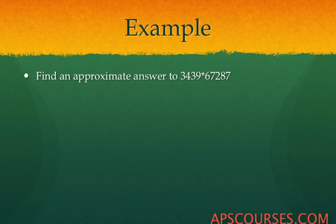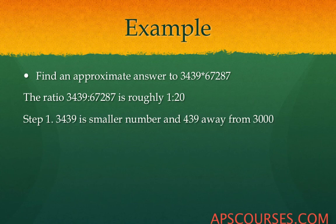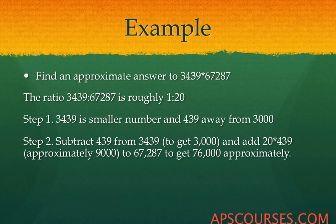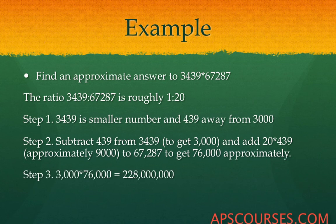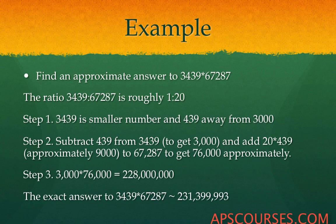Find an approximate answer to 3439 multiplied by 67287. The ratio is approximately 1 is to 20. Step 1: change the smaller number to a comfortable multiple — subtract 439 from 3439 to get 3000. Step 2: perform the reverse operation on the larger number by adding 20 times 439, giving approximately 76000. Multiply 3000 by 76000 to get 228000000 as the approximate answer. The exact answer is 231399993, giving a reasonable result.